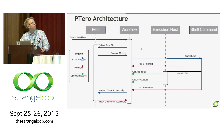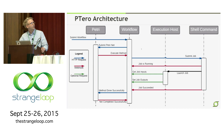Each service in the Tero architecture does exactly one thing. The shell command service is only responsible for executing shell commands — it doesn't know anything about Petri nets. The Petri service only executes Petri nets. And the workflow service manages interactions and handles inputs and outputs.